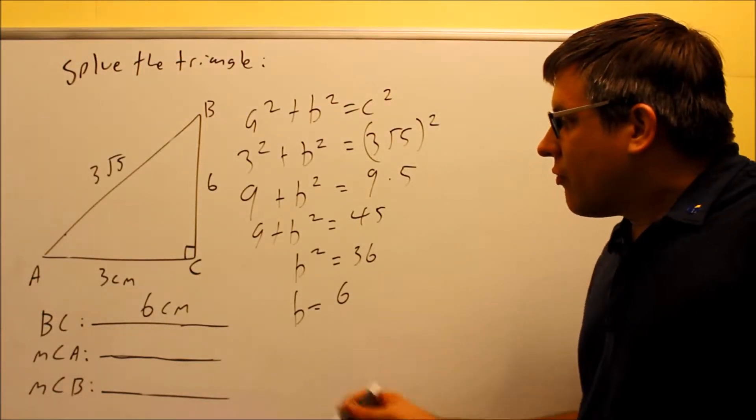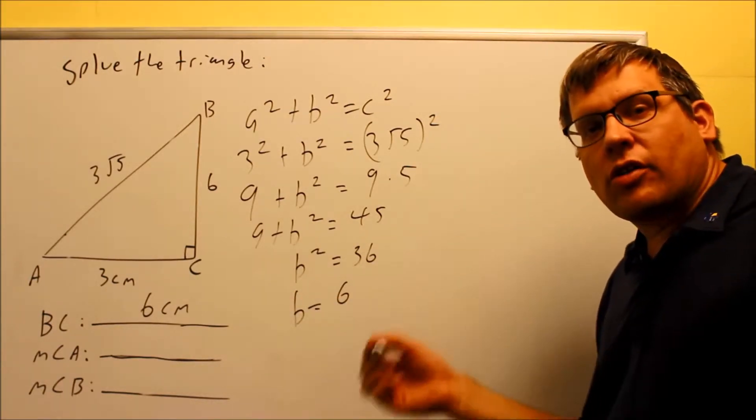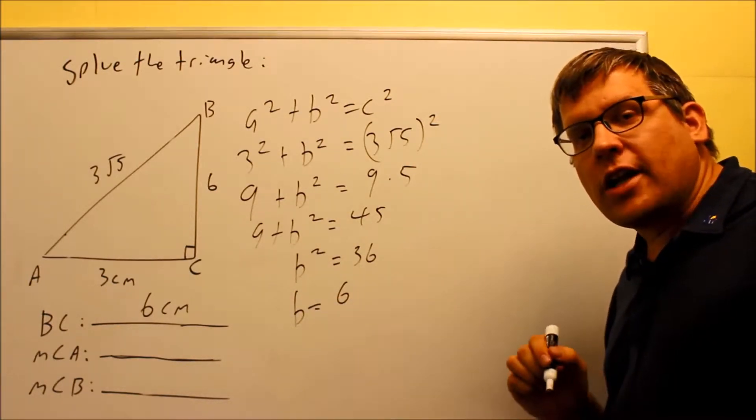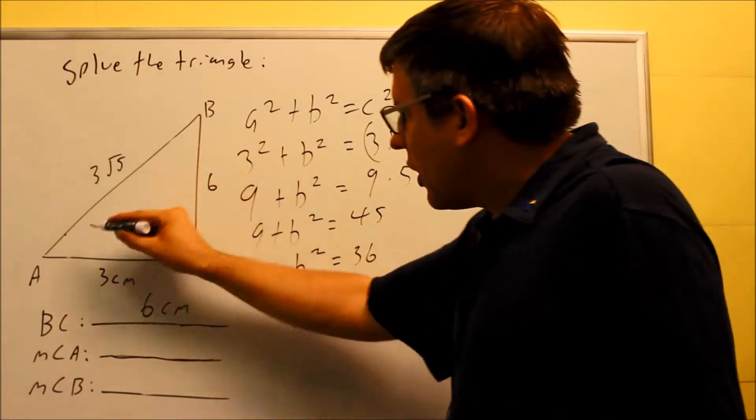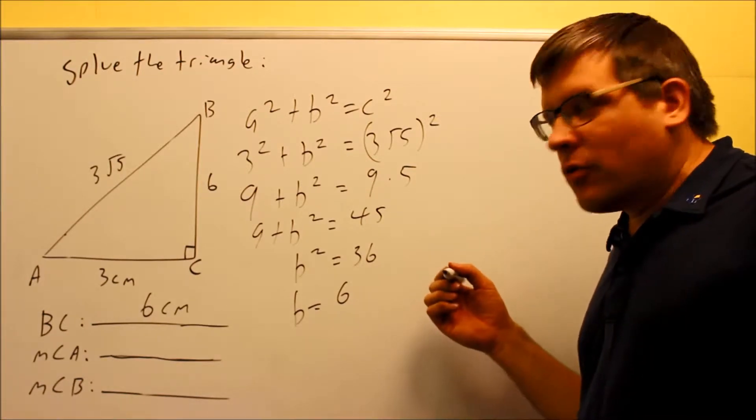Now that's complete. We need to find the measurement of A and measurement of angle B. Now normally if we had two out of the three angles, we could subtract those from 180 to get the third one, but this time we don't have enough information for that so we have to use a trig function to set up for this one.